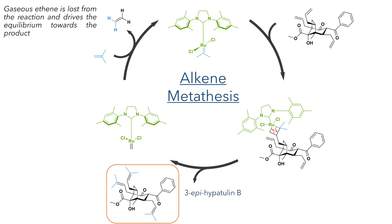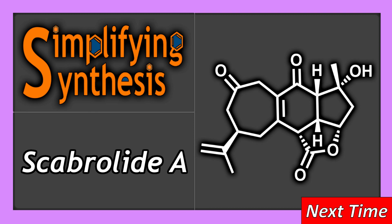So with that they completed the synthesis of 3-epi-hypatulin B. While not their initial target, this synthesis develops a lot of interesting chemistry and in particular highlights the benefits of using flow chemistry in the reactions of singlet oxygen. In the next video we will look at the total synthesis of Scabralide A.